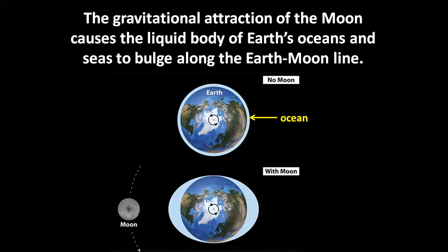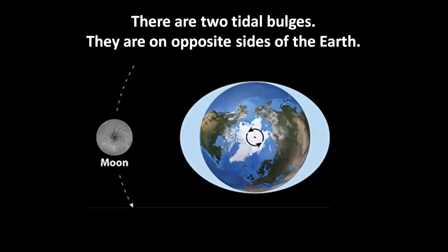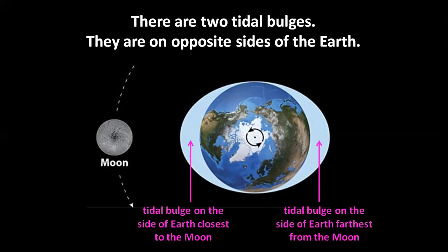The gravitational attraction of the Moon causes the liquid body of Earth's oceans and seas to bulge. This is a tidal bulge along the Earth-Moon line. The line linking the center of the Moon and the Earth is called the Earth-Moon line. This is a tidal bulge in the ocean. A bulge is a curved bump. There are two tidal bulges. They are on opposite sides of the Earth. A tidal bulge on the side of Earth closest to the Moon, and a tidal bulge on the side of Earth farthest from the Moon. These are high tides. We also have low tides.